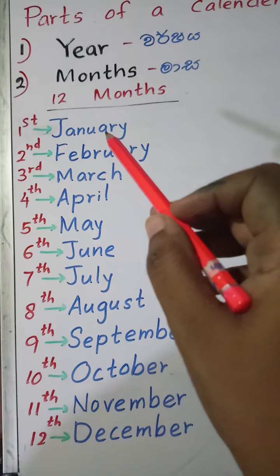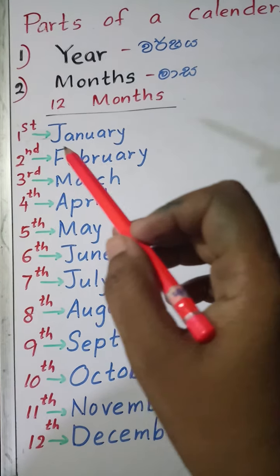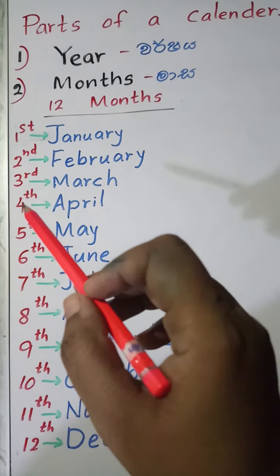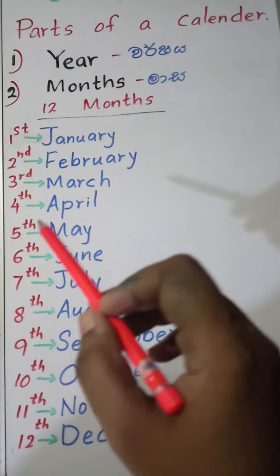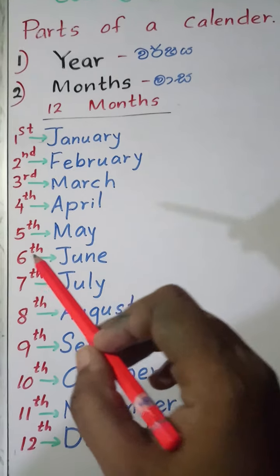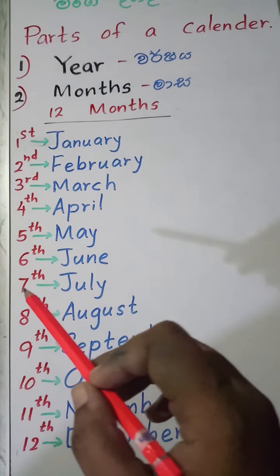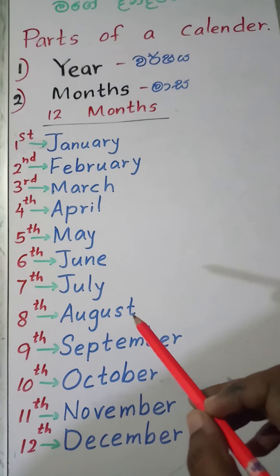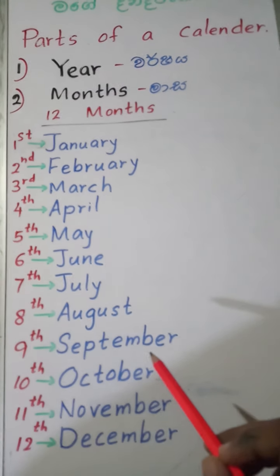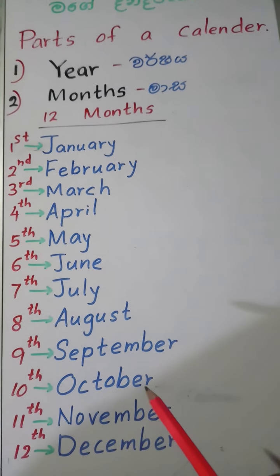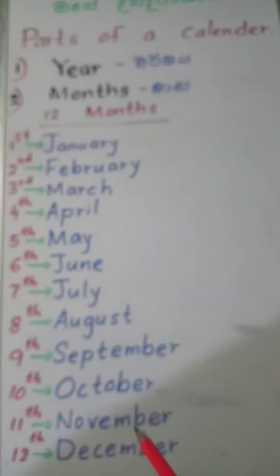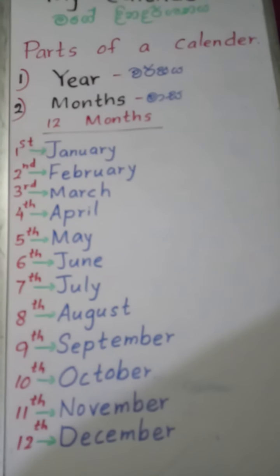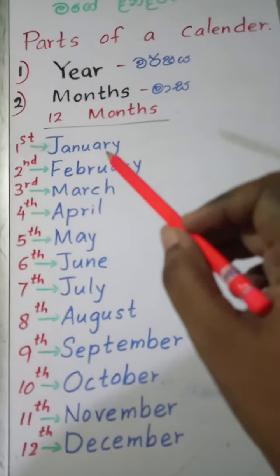First month is January. Second month is February. Third month is March. 4th is April. 5th is May. 6th is June. 7th is July. 8th is August. 9th is September. 10th is October. 11th is November. 12th is December.